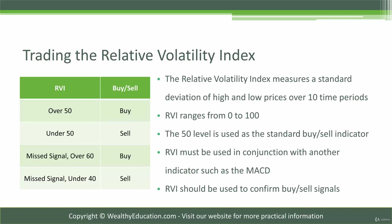Donald Dorsey invented the RVI and these are some of the rules he came up with when he invented this Volatility Index. Another rule is that if you're holding a long position, you definitely want to sell when the RVI drops under 40. And if you're holding a short position, you definitely want to cover that position when the RVI rises above 60.